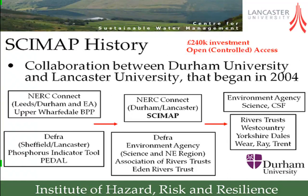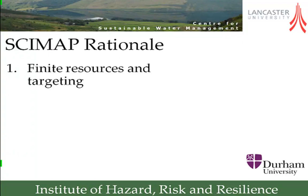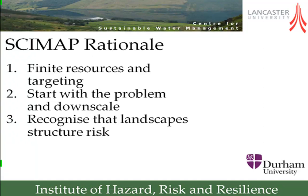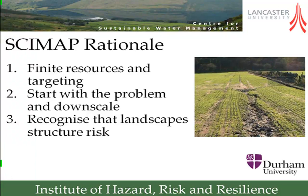The rationale behind Scimap: first, finite resources and targeting. If you've got a finite pot of money and you want to use it to best effect in an agricultural landscape, you want to make sure interventions are done in the right place. Second, start with the problem and then work out where in the catchment that problem is coming from. Third, recognize that the landscape is a very strong filter of risk — the landscape structures risk.